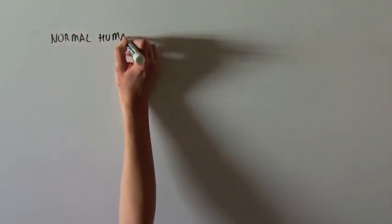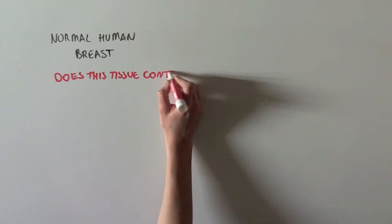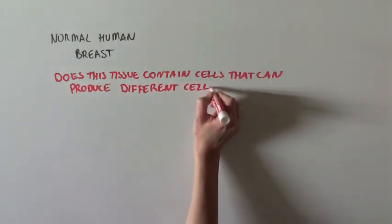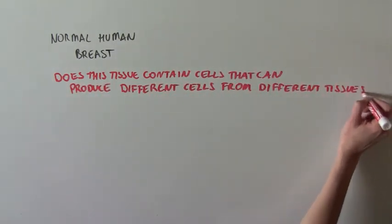These scientists were studying normal human breast tissue and were interested in seeing if this tissue contained cells that could produce a variety of different cells from different tissues.